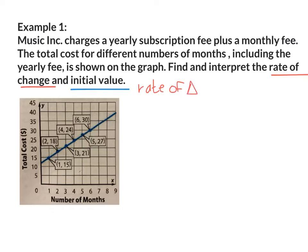So I need the slope formula. M equals y sub 2 minus y sub 1 all over x sub 2 minus x sub 1. I can choose any two points on the graph. However, I'm going to use 2, 18 and 6, 30. I'm going to label x sub 1, y sub 1, x sub 2, y sub 2.